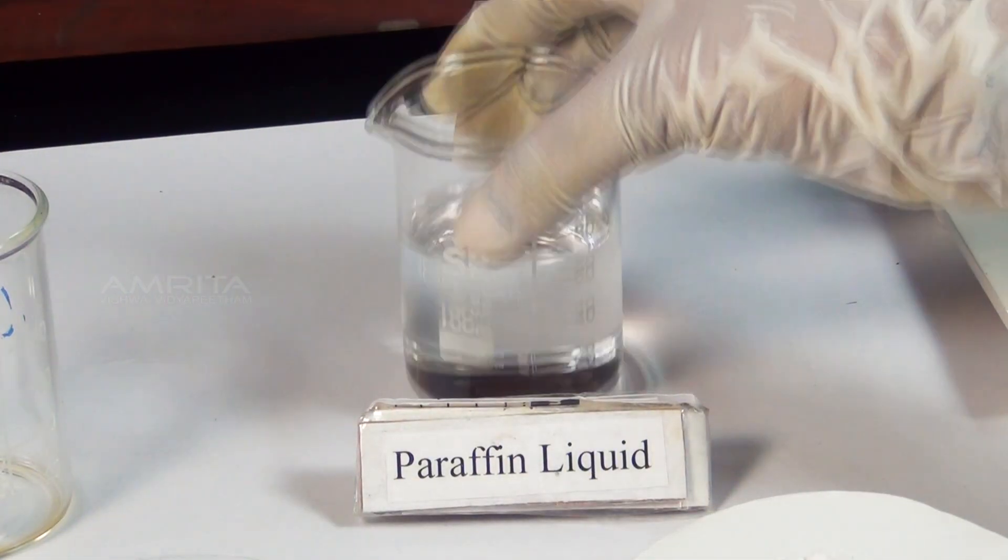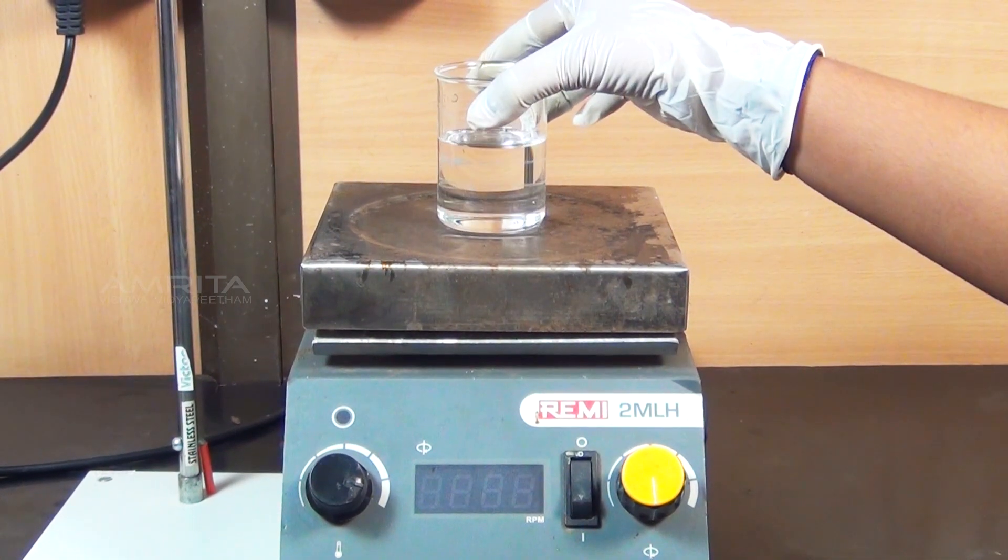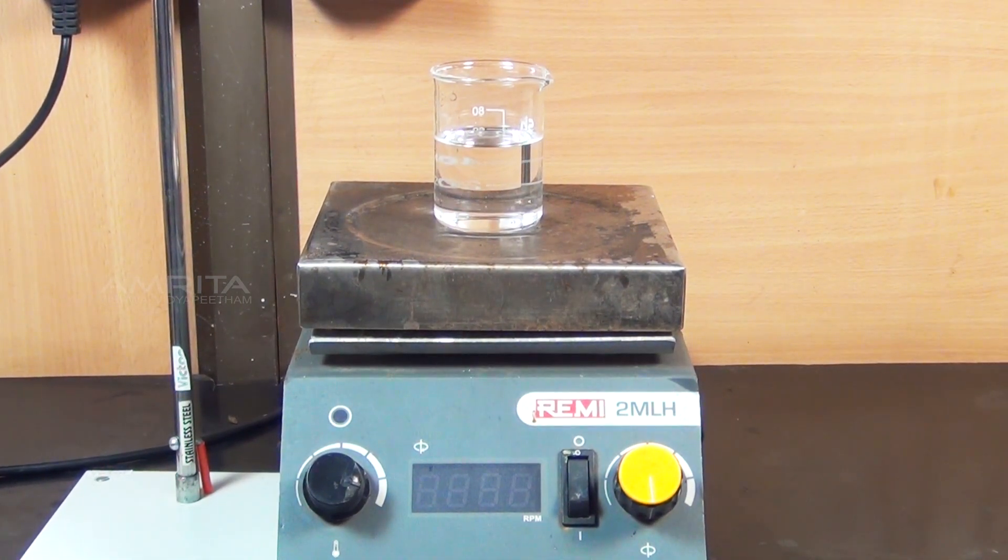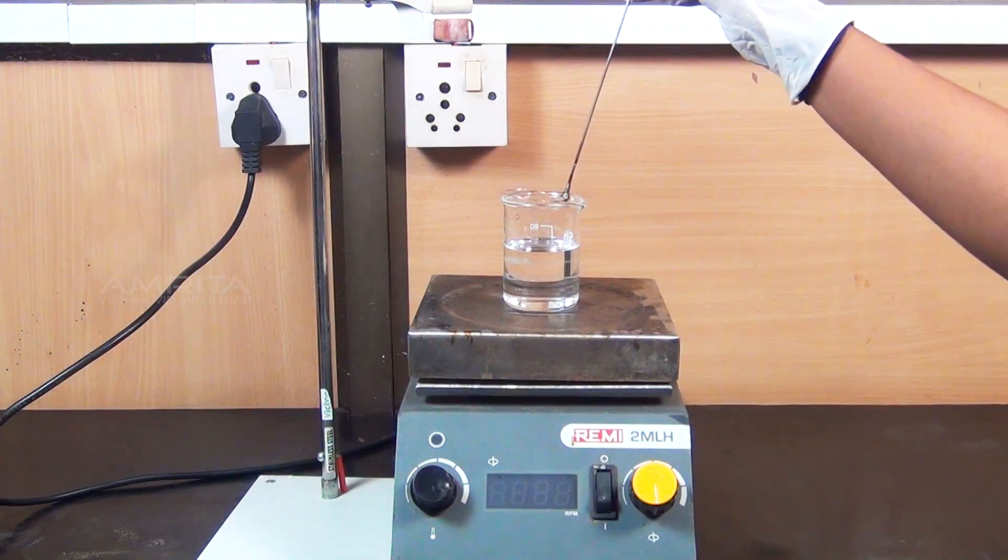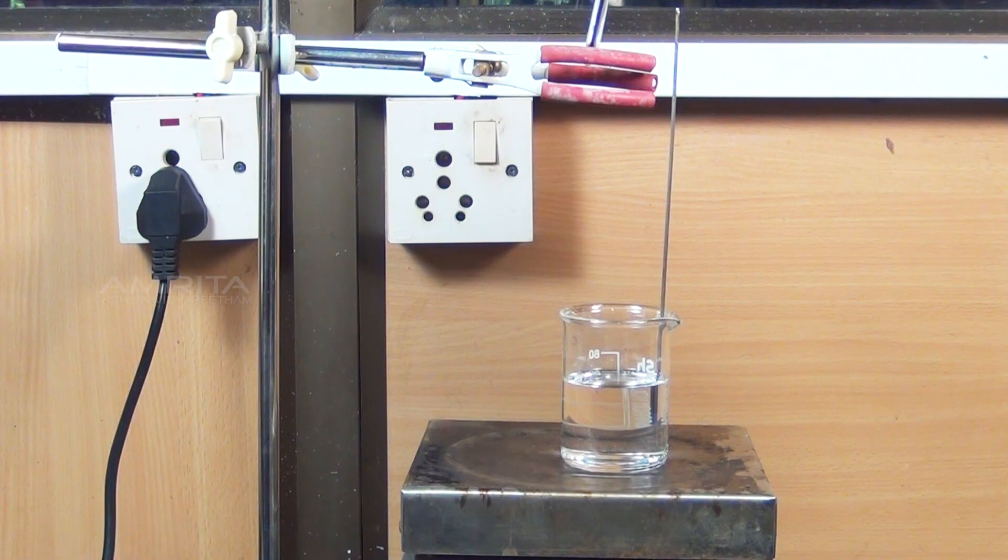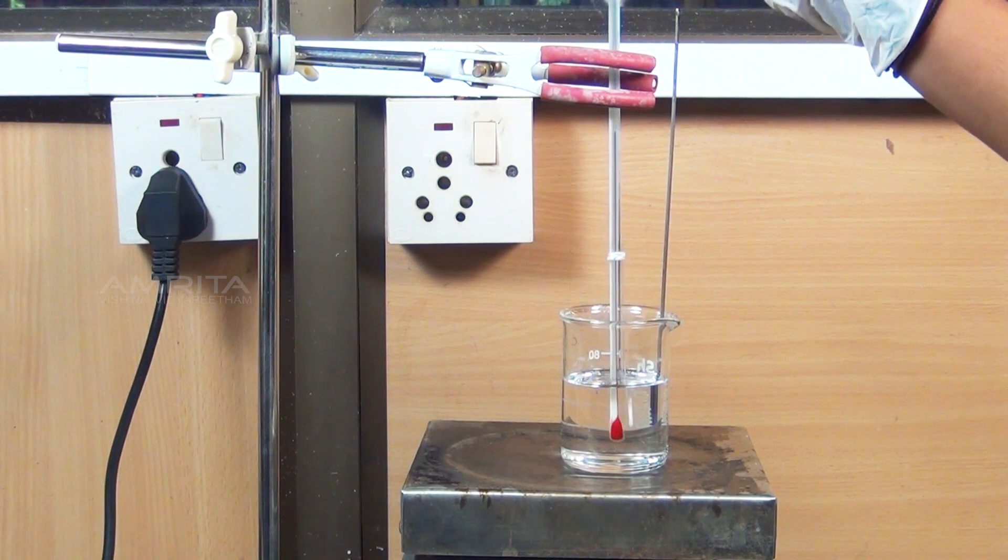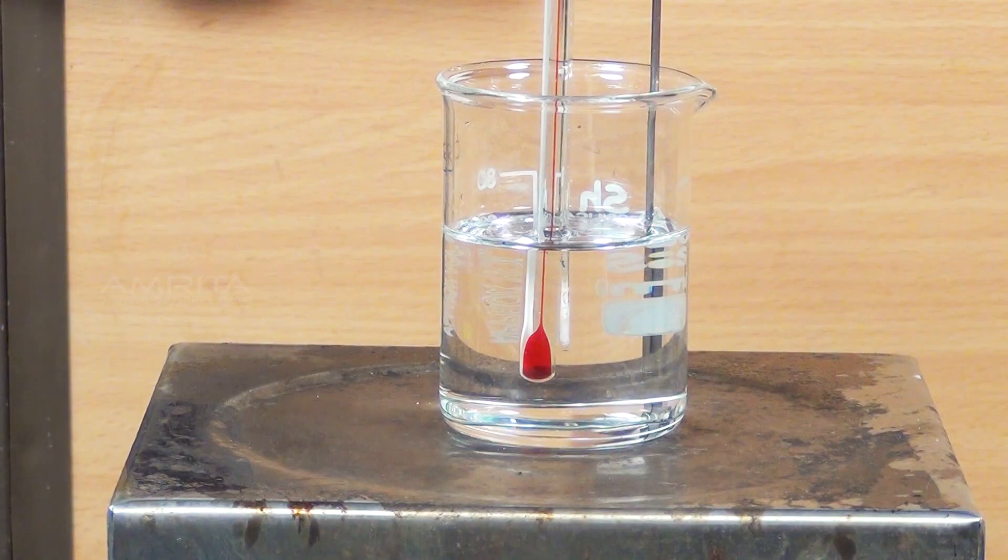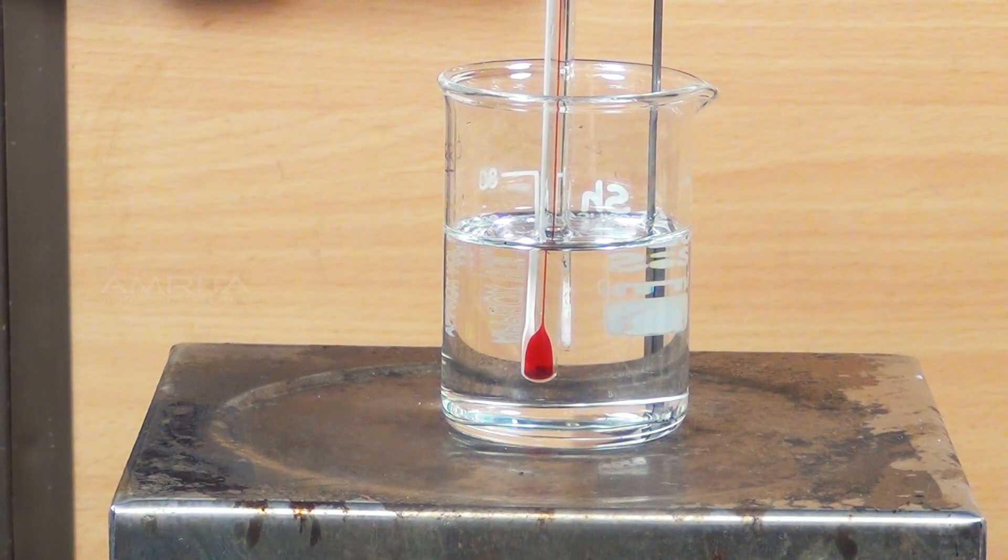Take the 100ml beaker containing liquid paraffin and place it over the hot plate. Insert the stirrer in the liquid paraffin bath. Clamp the thermometer carrying the capillary tube to the iron stand and immerse them in the bath of the liquid paraffin.